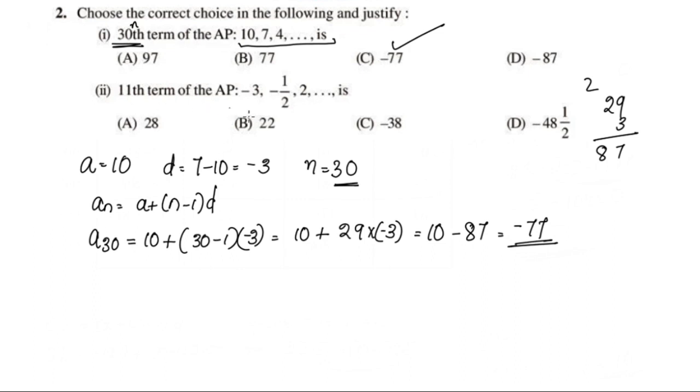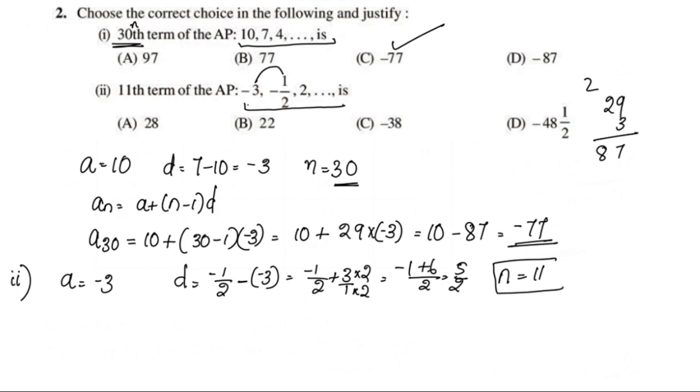Second question. The 11th term of the AP: negative 3, negative 1/2, 2, and so on. The formula is a_n equals a plus n minus 1 into D. A is negative 3, and D is 5 by 2.